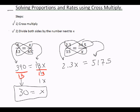What we're going to do next is divide both sides by the number next to x. The number next to x is 2.3. Divide both sides by the number next to x. 2.3 divided by 2.3 equals 1x, or just x. And then 517.5 divided by 2.3 on my calculator is 225.